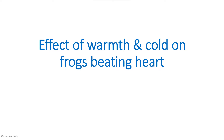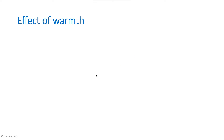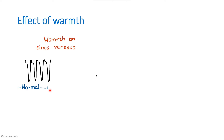The next experiment is the effect of warmth and cold on the frog's beating heart. For warmth, we first draw the normal cardiogram, then draw the effect of warmth on the sinus venosus. Here, the heart rate has increased because the sinus venosus is the pacemaker — warmth increases the metabolic rate, which increases the impulse rate, thus increasing heart rate. The amplitude has also decreased because increased heart rate reduces ventricular filling time, decreasing end-diastolic volume and initial muscle fiber length. According to Starling's law, the force of contraction decreases, hence the reduced amplitude.